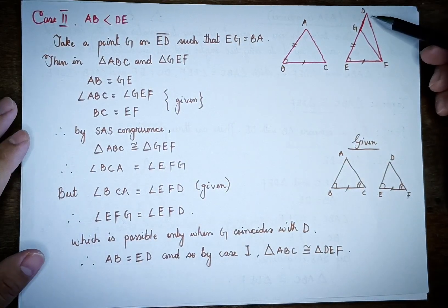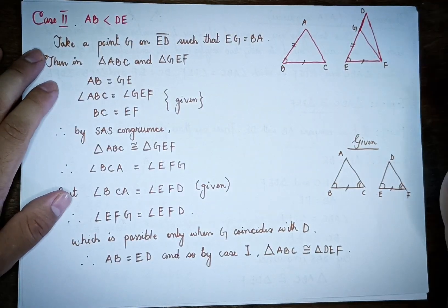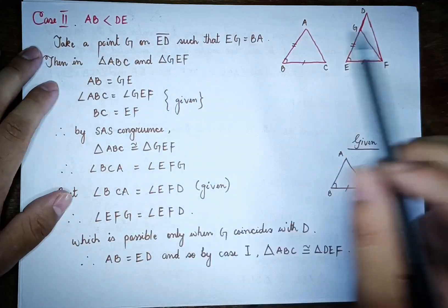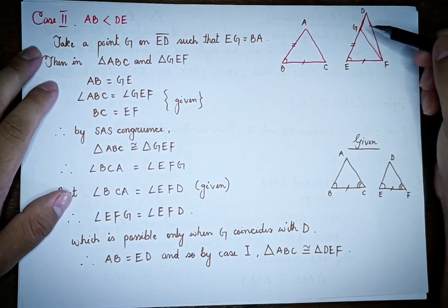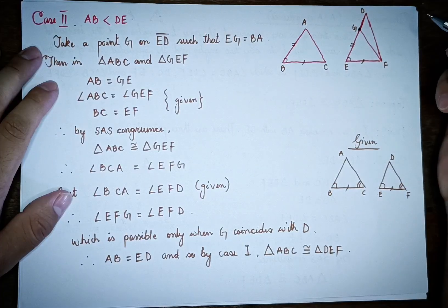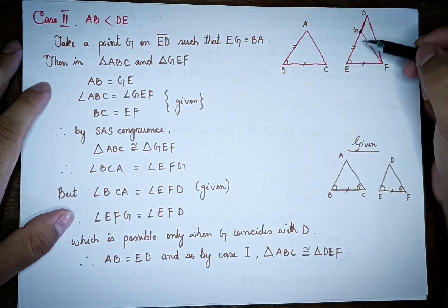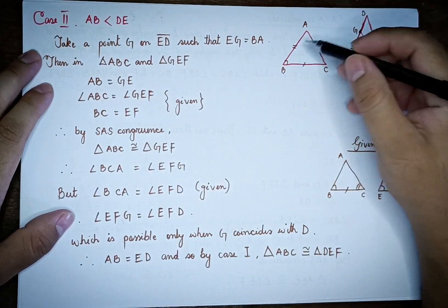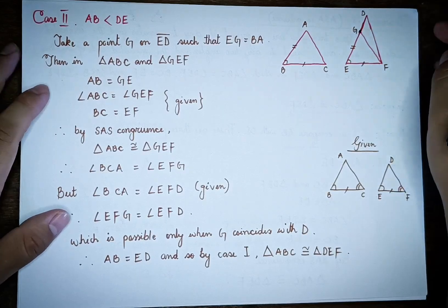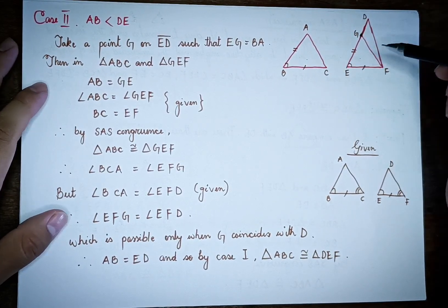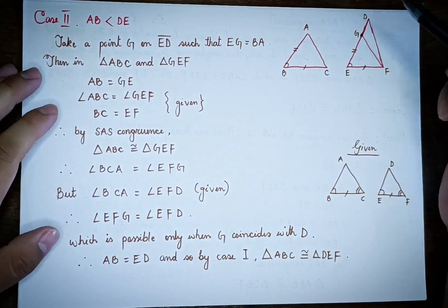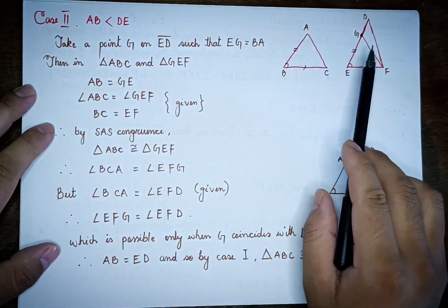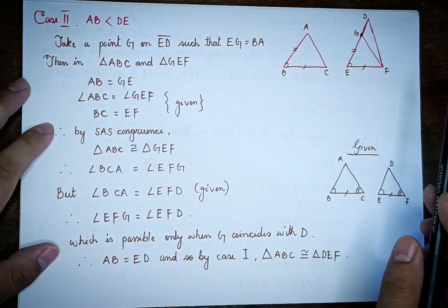Take a point G on ED such that GE equals AB. Now check triangle ABC and triangle GEF. AB and GE are equal by construction.